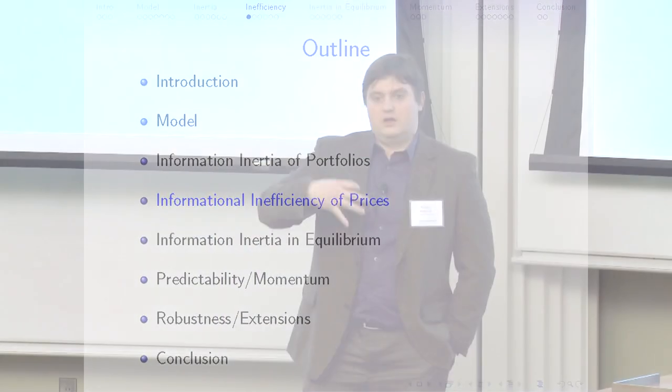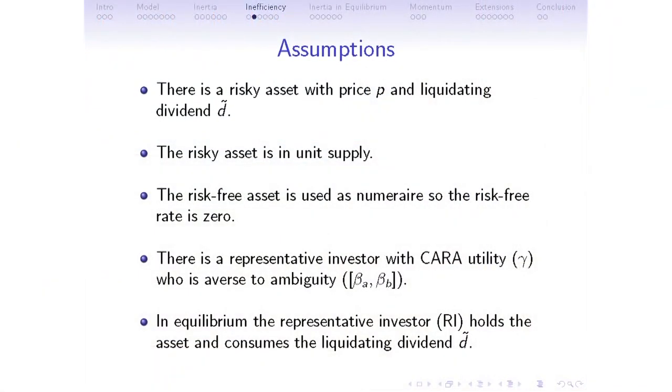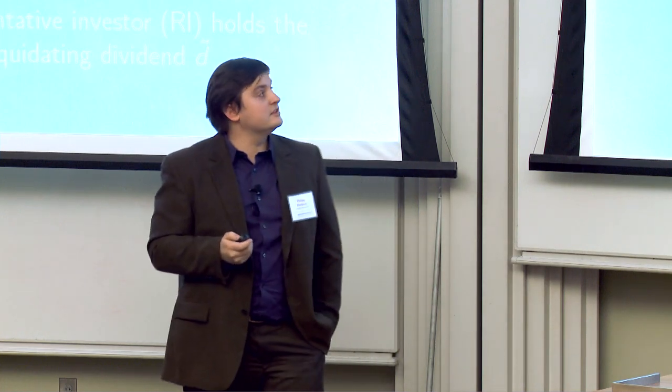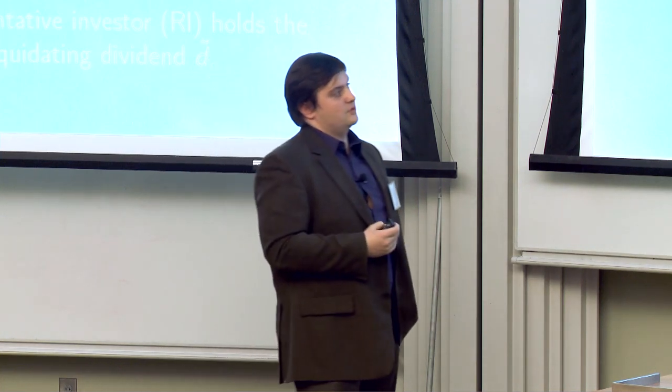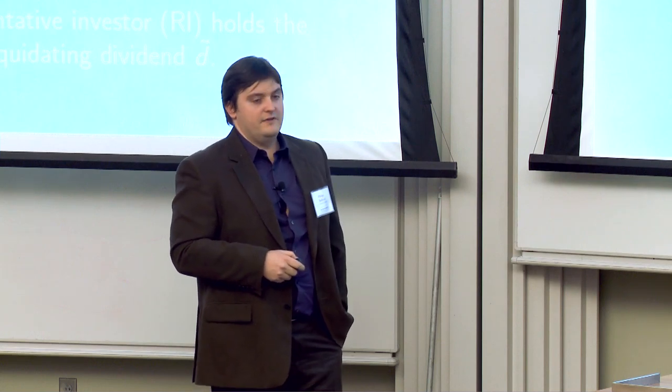This is the partial equilibrium portfolio choice result: risky portfolios can fail to react to news. Now I want to discuss what happens in a representative-agent economy. The assumption is standard: a risky asset with price P, where D-tilde is a liquidating dividend, a simple exchange economy with the risky asset in unit supply, no consumption at date zero, a risk-free asset in perfectly elastic supply, and interest rate of zero. The representative investor has CARA utility, is averse to ambiguity, and considers covariance set beta-A to beta-B. In equilibrium, the rep agent holds the asset and consumes the liquidating dividend.